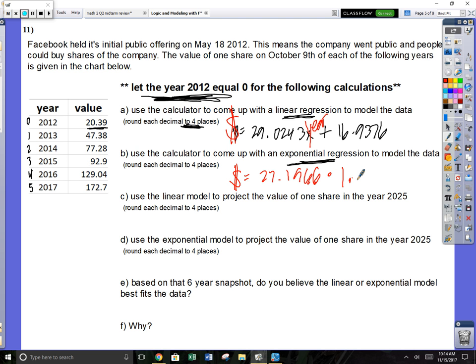You got to copy that down. Your exponential, the money of that stock is going to equal 27.1966 times 1.4864 raised to whatever year you're interested in. If I'm interested in the year 2025, you are not going to plug 2025 in. You're going to plug 2025 minus 2012. 2012 is the beginning, and that should be 13.